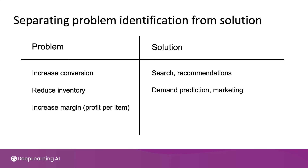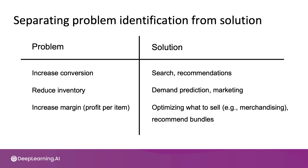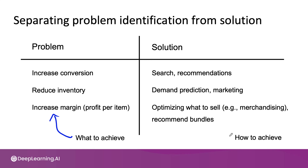For the problem of increasing margin, you may come up with ways to use machine learning to optimize what to sell — what is worth selling and what is not. In e-commerce retail, sometimes this is called merchandising: just deciding what to sell. Or you can recommend bundles — if someone buys a camera, maybe you can recommend a protective camera case — and these bundles can also increase margin. Problem identification is the step of thinking through what you want to achieve, and solution identification is thinking through how to achieve those objectives.